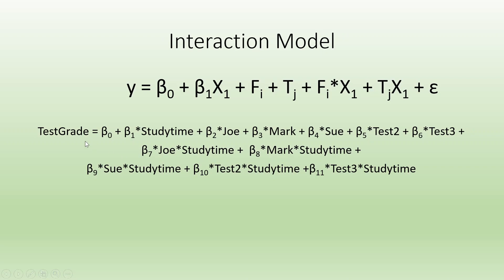Now I want to make the interaction model. I am considering the intelligence of the students combined with the amount of study they are doing. So test grade equals beta 0 plus beta 1 study time plus beta 2 Joe plus beta 3 Mark plus beta 4 Sue plus beta 5 test 2 plus beta 6 test 3 plus beta 7 Joe×study time plus beta 8 Mark×study time plus beta 9 Sue×study time plus beta 10 test2×study time plus beta 11 test3×study time.